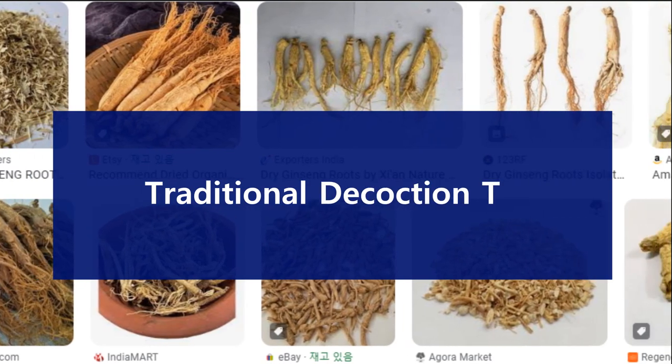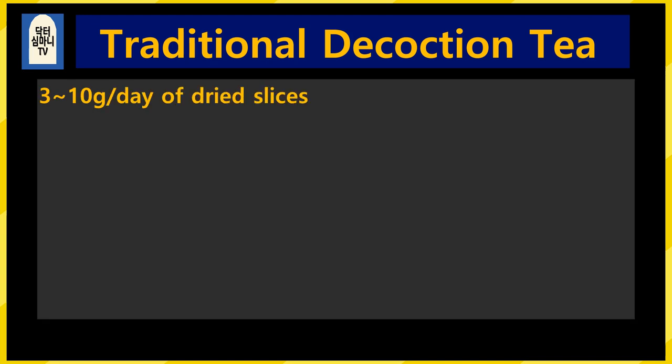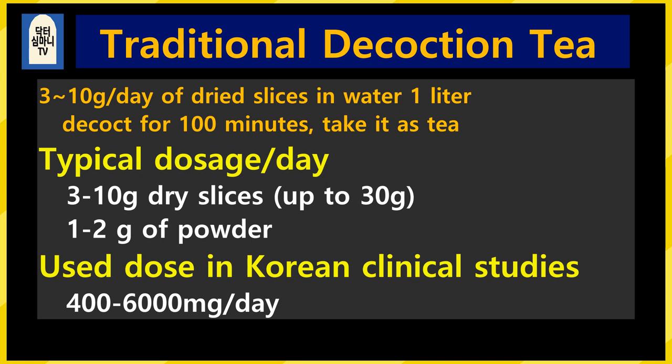For those who want the traditional method, you can buy dried ginseng or red ginseng. A daily amount of dried ginseng is 3 to 10 grams. In 1 liter of mineral water, start with the smallest amount of 3 grams. Since ginseng is a root, decoct it for about 100 minutes. You can take it like tea. The maximum daily dose is 30 grams. In the case of powder, the usual dose is about 1 to 2 grams per day. One of the most famous ginsengs is Korean ginseng, and there are many clinical studies in Korea.